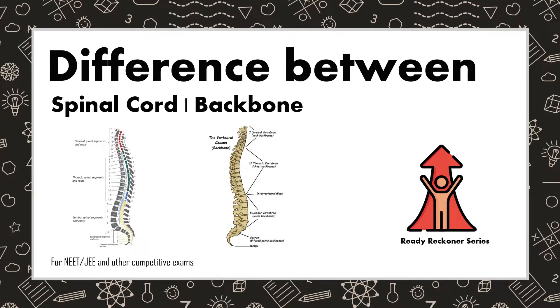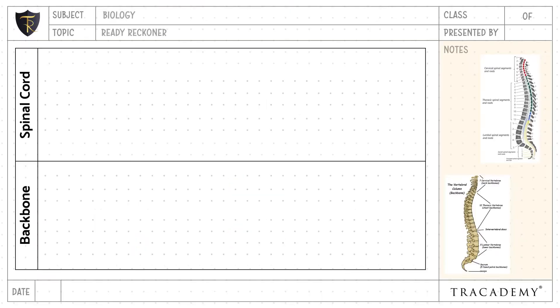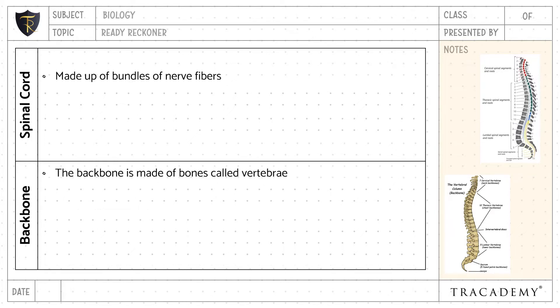In this video, let's understand the difference between the spinal cord and the backbone. The spinal cord is made up of bundles of nerve fibers, while the backbone is made up of bones called vertebrae.